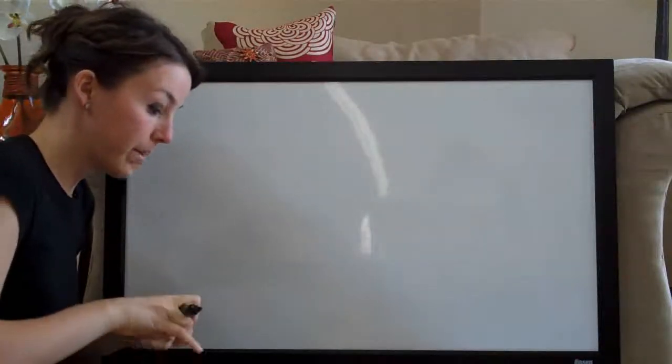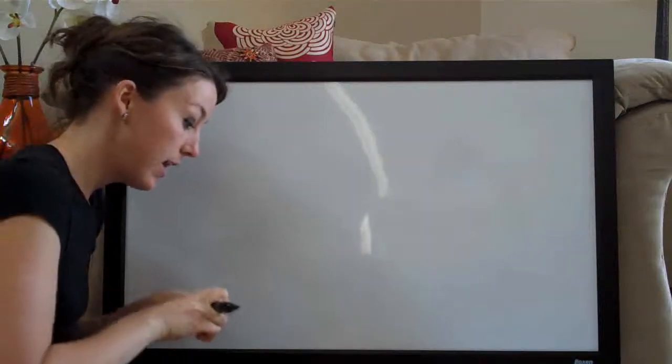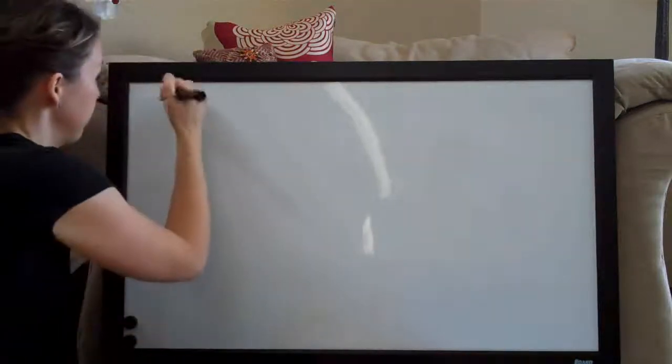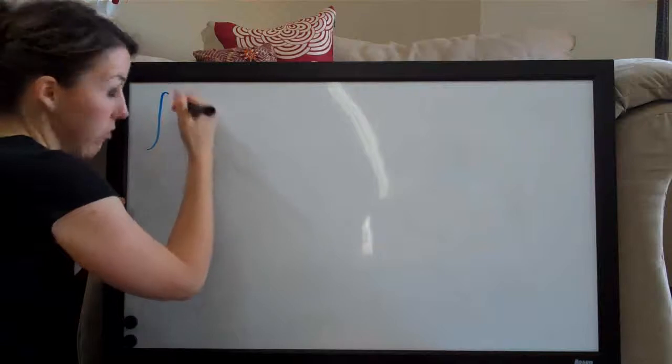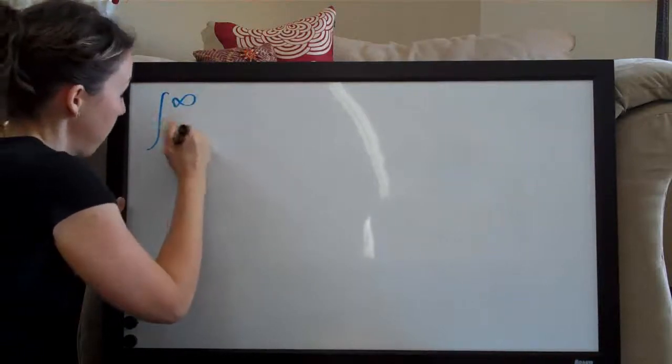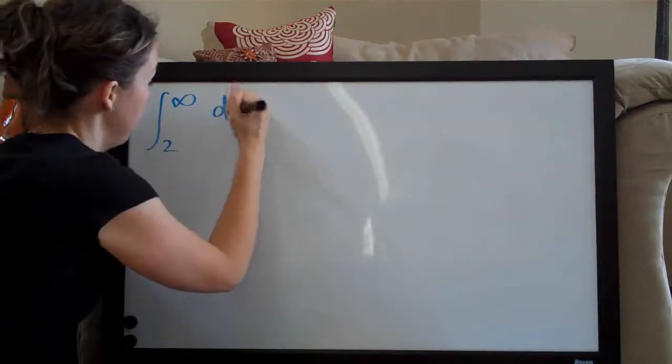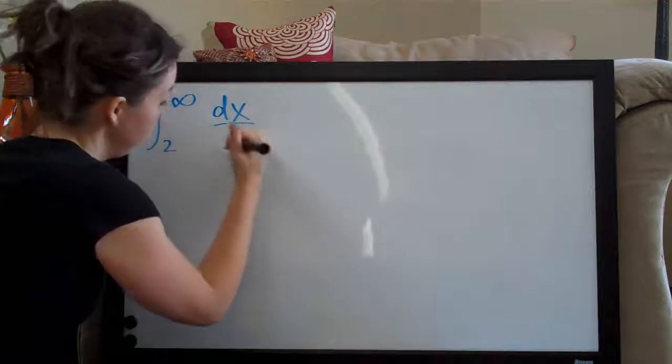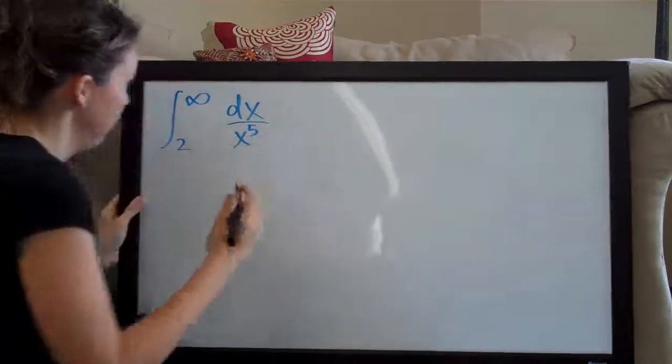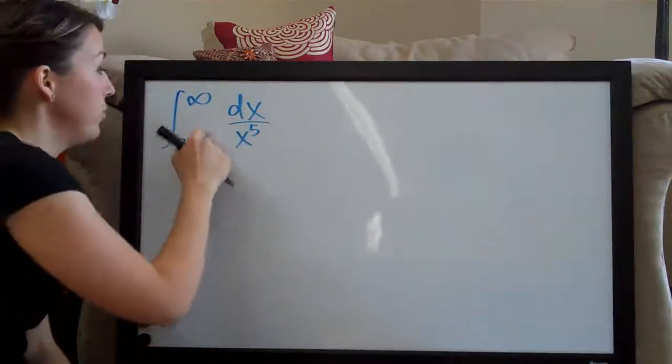We are going to be doing some improper integrals today. The first one is the integral of dx over x to the fifth on the range two to infinity.